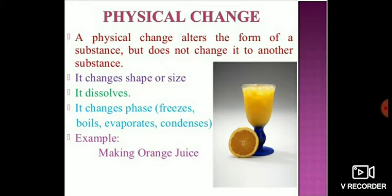That means if the substance changes from solid to liquid, or liquid to gas, or from gas back to solid or liquid — all of these changes are considered as physical changes, as they occur only in the physical properties of any substance. For example, making orange juice: the orange is squeezed to get the juice. Earlier it was also orange juice, and it is transferred into the glass. That means there is no new substance formation.